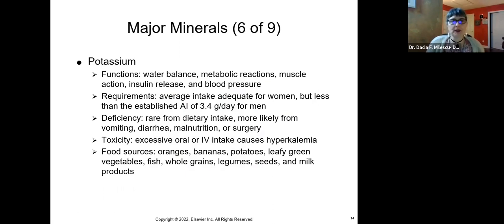Next one. Super important is potassium. Too much potassium can kill you. Too little potassium can kill you. So you can have hypokalemia, which is too low, or hyperkalemia, which is too high. So how do you get potassium? Basically, you can get it from leafy greens, bananas has a high level of potassium, oranges, potatoes, vegetables, fish, whole grains, legumes, seeds, and milk products.